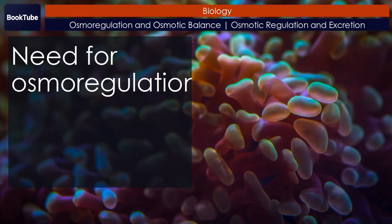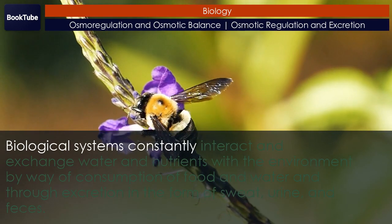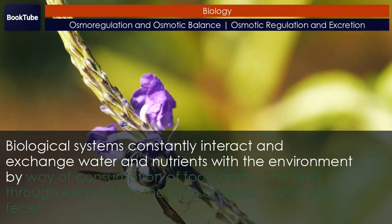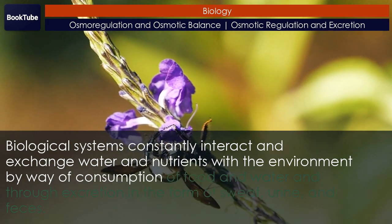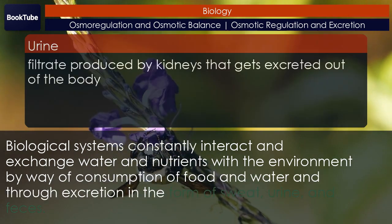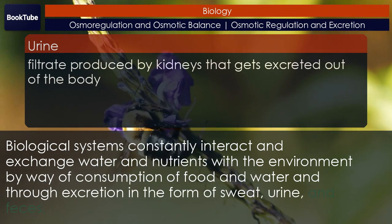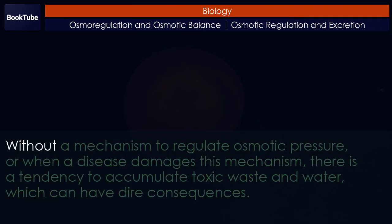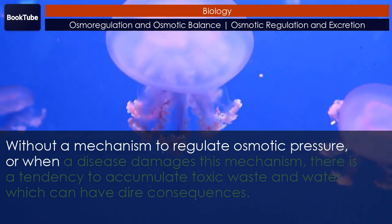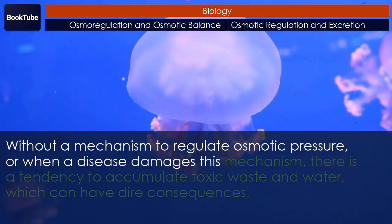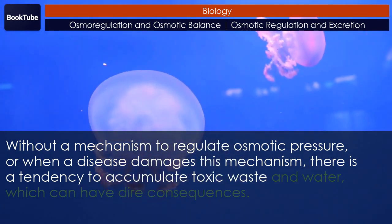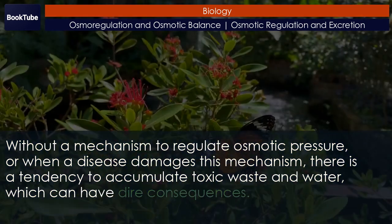Need for osmoregulation. Biological systems constantly interact and exchange water and nutrients with the environment by way of consumption of food and water, and through excretion in the form of sweat, urine, and feces. Without a mechanism to regulate osmotic pressure, or when a disease damages this mechanism, there is a tendency to accumulate toxic waste and water, which can have dire consequences.